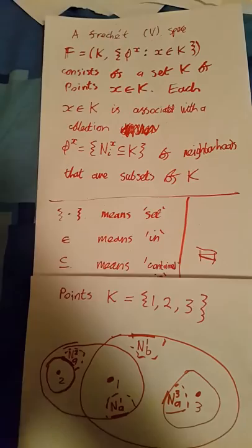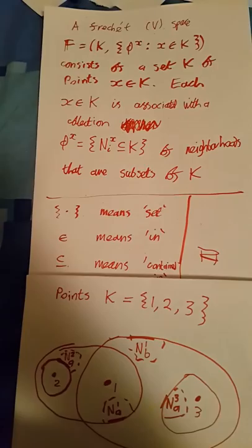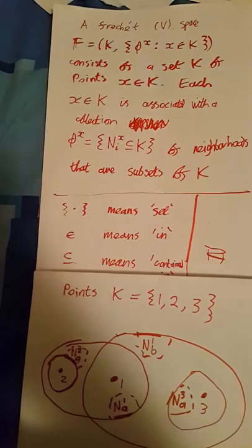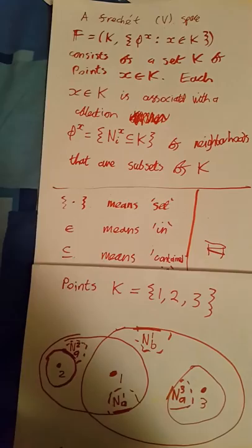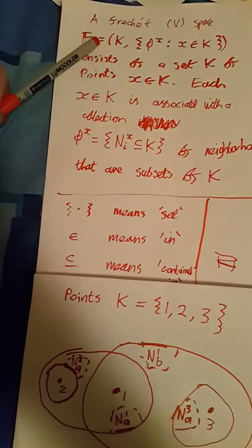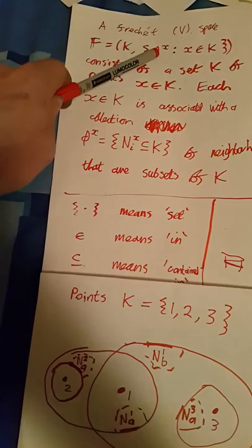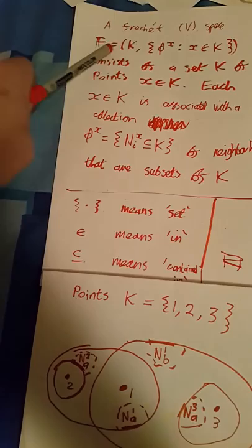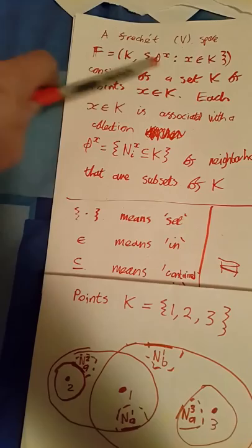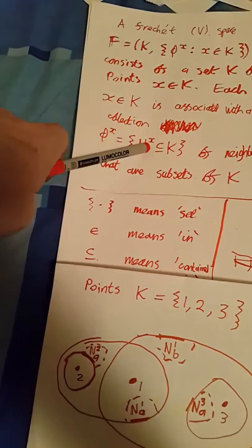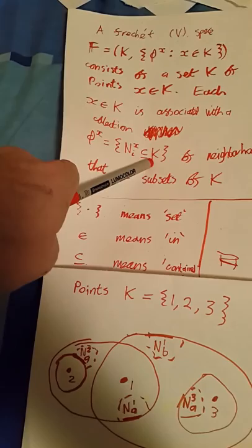I recently made a video about a fascinating new branch of topology that I'm discovering from Sapinski's book General Topology. The basic idea is to start off with some systems which he calls Fréchet V-spaces, which are in some sense more fundamental objects than topological spaces. A Fréchet V-space consists of a set K of elements, and each element X is associated with a collection of neighborhoods, which are subsets of our ambient space K.